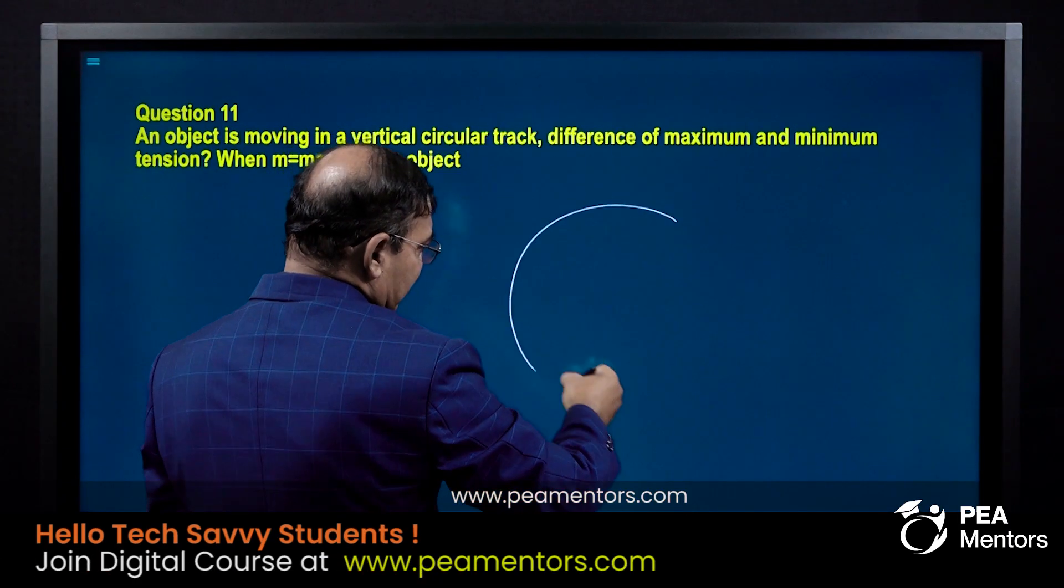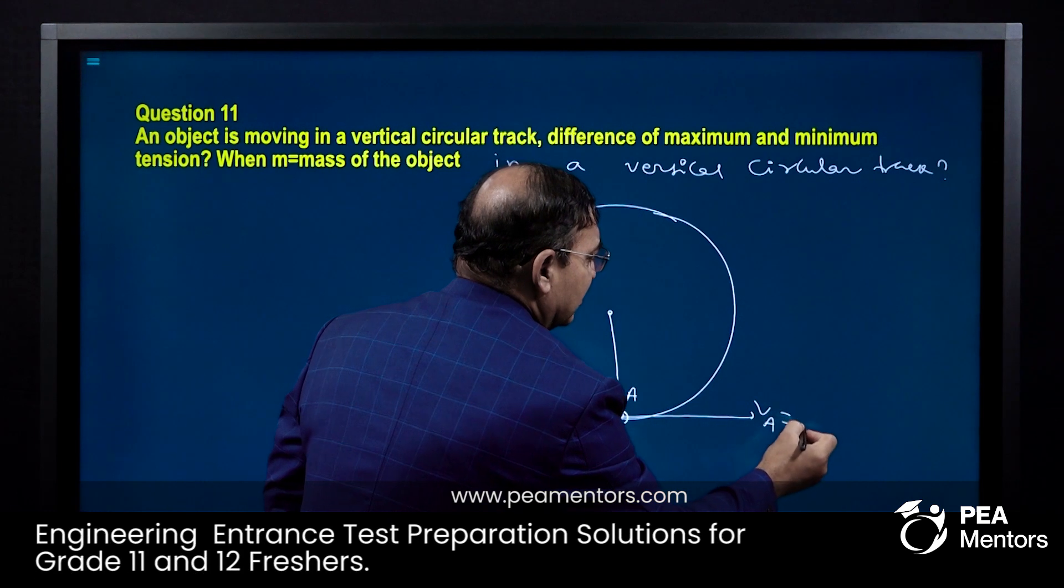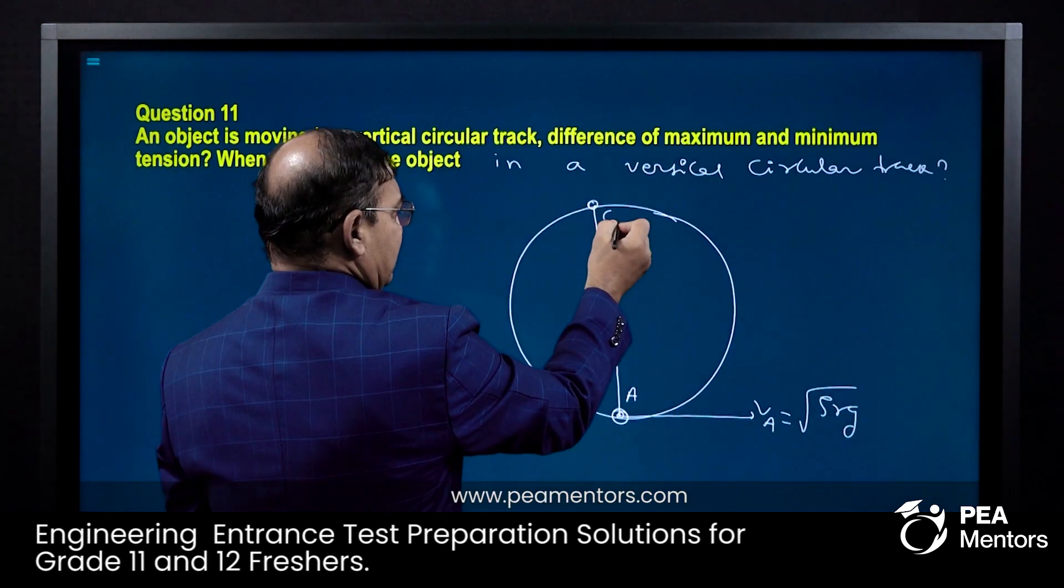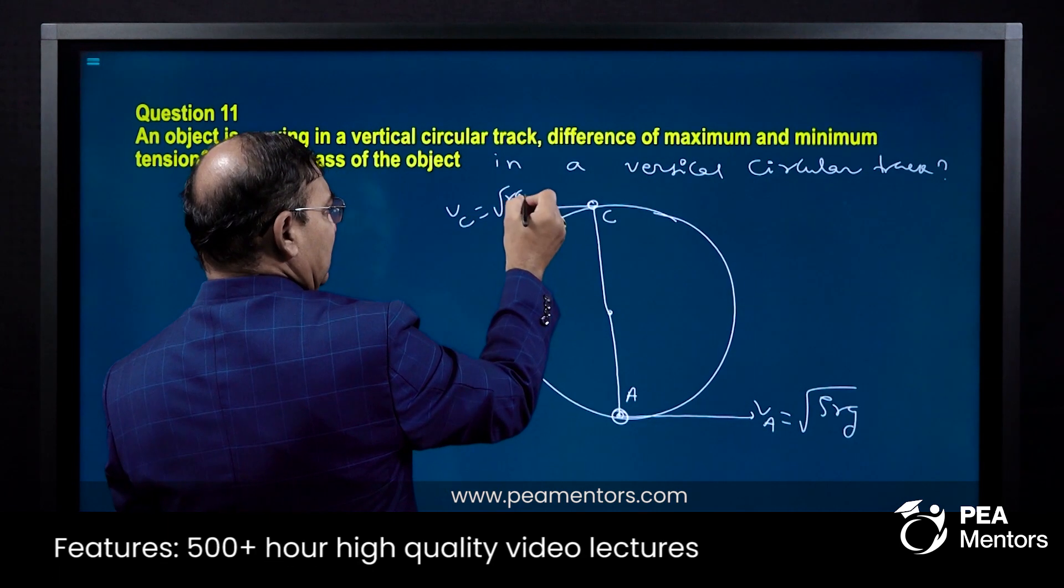In a vertical circular track, velocity VA equals root over 5RG. This is the critical velocity. At point C, velocity equals root over RG, the critical velocity at the top.